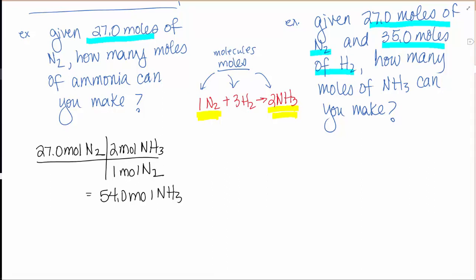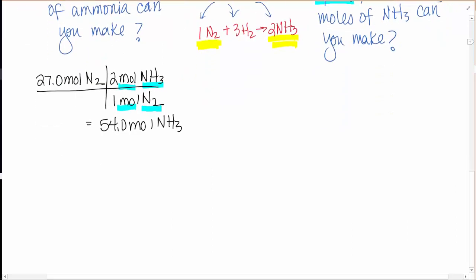In this first problem where I have 27 moles of nitrogen, I can use from my balanced equation a mole ratio because I have nitrogen and I want ammonia. According to this, one mole of nitrogen to make two moles of ammonia. I put N2 on the bottom so it cancels. That's assuming I had plenty of the one I didn't mention. This is the piece that we're adding.